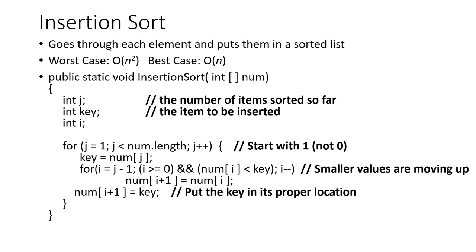So the next algorithm I'm talking about is insertion sort. And that goes through each element and puts them in a sorted list. It's very similar to selection sort from before. The worst case for any time is Big O n squared. And the best case is Big O n. This one also tends to be a little bit faster than selection sort. And here is the code for it right here.